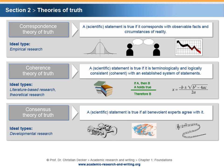A third theory of truth postulates that a scientific statement is true if all benevolent experts agree with it. This theory predominantly matches and supports developmental research, which can be found amongst others in engineering sciences as well as in fine arts and other disciplines. Here, the research task lies in the development of a prototype or object that satisfies certain predetermined objectives. Typically, more than one possibility exists that satisfies the objectives. Hence, the opinion of experts might be used in order to determine the truth of the scientific statement.